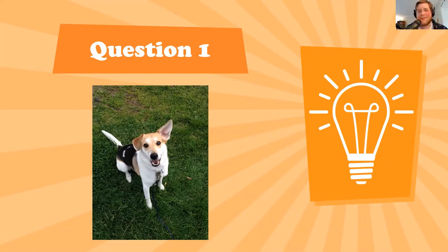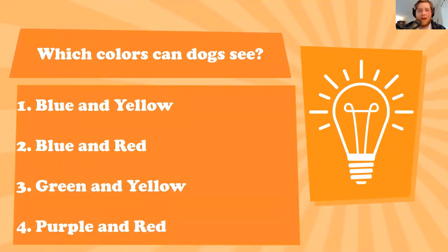However, there is a common myth that dogs can only see in black and white. However, a lot of behavioral tests have shown that dogs can actually see two colors on the color spectrum. So it is largely grayscale. However, there are two colors that it appears dogs are capable of seeing. So my question for all of you guys is, which colors are dogs able to see? Is it blue and yellow, blue and red, green and yellow, or purple and red?